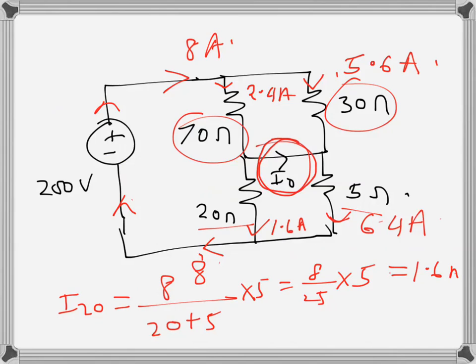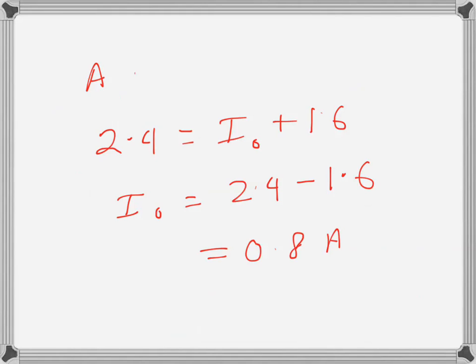We need to find i naught, so we can apply KCL at this node. Let's say this is node A. At node A, 2.4 is coming, and i naught plus 1.6 is going away. So i naught will be 2.4 minus 1.6, which is 0.8 amps, or we can write 800 milliamps.